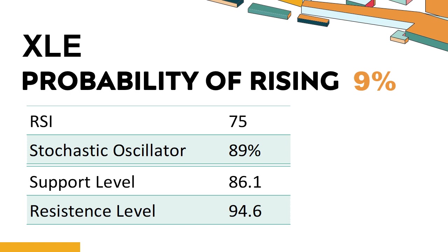Is XLE trading within its normal technical range? Technical Signals and Analysis: XLE's 14-Day Relative Strength Index (RSI) value was 75. When the RSI exceeds 75, it is considered to be in the overbought region — the stock price may be overvalued, and a price correction may be required. It means that the stock price has been experiencing a strong uptrend and has risen too fast, causing the RSI to reach a high level. The current stochastic oscillator of XLE is 89%.